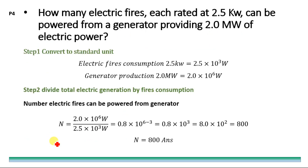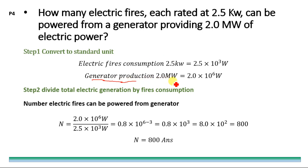Numerical number four: how many electric fires, each rated at 2.5 kilowatt, can be powered from a generator providing 2.0 megawatt of electric power? The generator produces 2.0 megawatt, which equals 2.0 × 10⁶ watts. Each electric fire consumes 2.5 kilowatt, which equals 2.5 × 10³ watts.